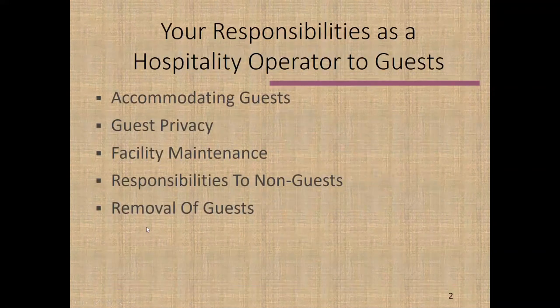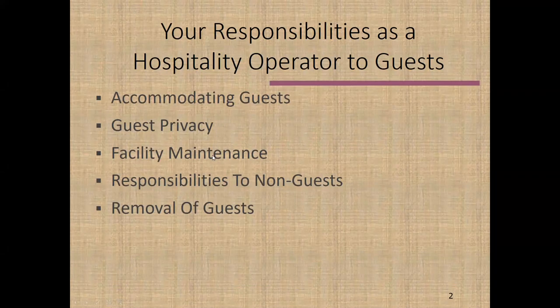We're going to divide up the topics in this chapter into five discrete units. One is accommodating guests, then we'll talk about privacy issues of guests. We'll talk about how we maintain our facility and what our responsibilities are to people present in our facility who don't qualify as guests. And finally, the rather awkward situation in which we need to remove somebody who actually is a guest.